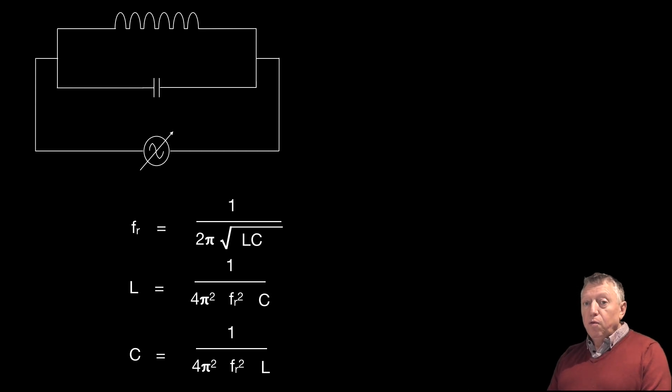Now, there's two ways of doing that. You could take the first formula, which is on the equation sheet, FR equals 1 over 2π√LC, and you could change the subject of the formula. Or you could simply memorize the two subsequent equations. And that might be the easiest thing to do.